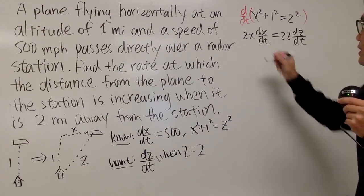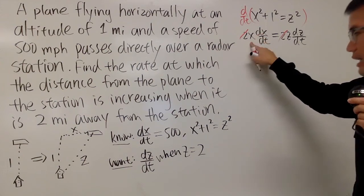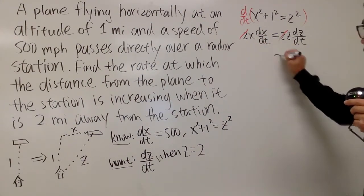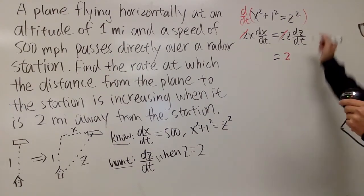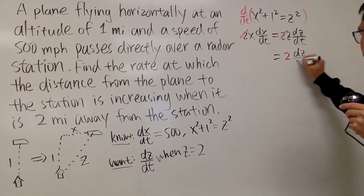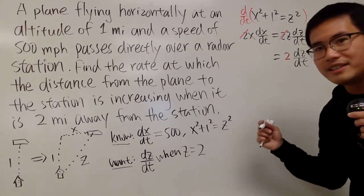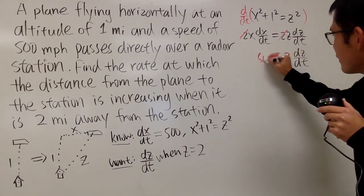Now we can divide the 2 on both sides, so we can cross this out. That's very nice. We know that x, we don't know yet, actually. We know z is equal to 2, so I will write this down: z is equal to 2. Do we know dz/dt? We don't, so I'll just put down dz/dt. And again, x, we don't know yet, but do we know dx/dt? Yes, that's 500. So I'll just put that down right here. We have the 500 here.